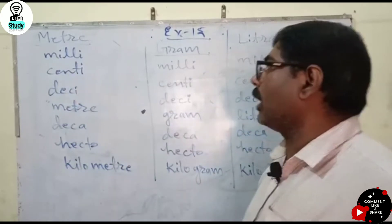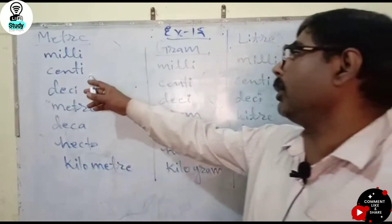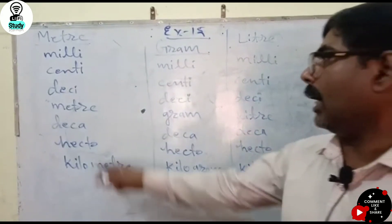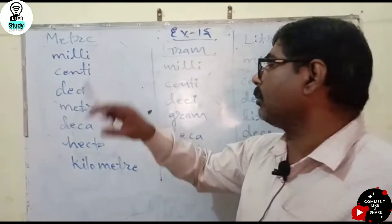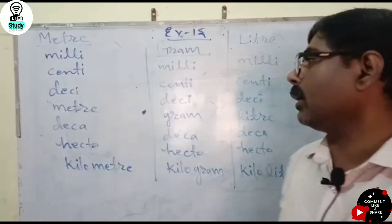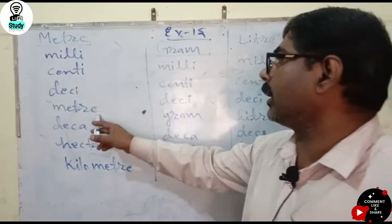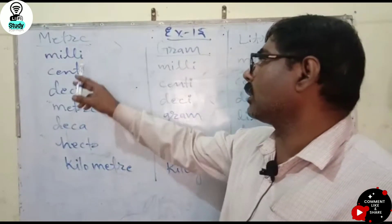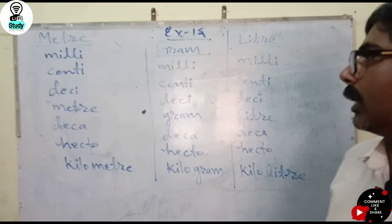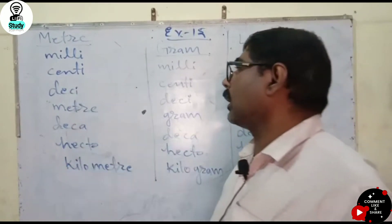Millimeter is the smallest unit. Centimeter is 10 times greater, Decimeter is 100 times greater, Meter is 1,000 times greater — that means one thousand.